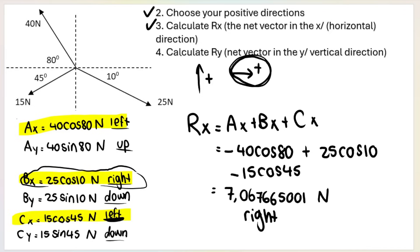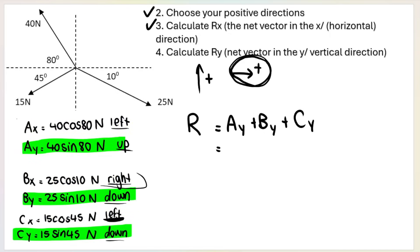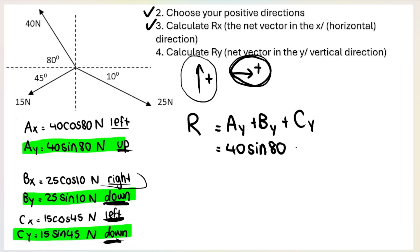That was step three. Now for step four we calculate R-y — the net vector in the y direction — adding A-y, B-y, and C-y. I chose up as positive, so A-y is positive because it's going up: +40 sin 80. B-y and C-y are going down, so both are negative: −25 sin 10 and −15 sin 45, because they're going in the opposite direction to my chosen positive.